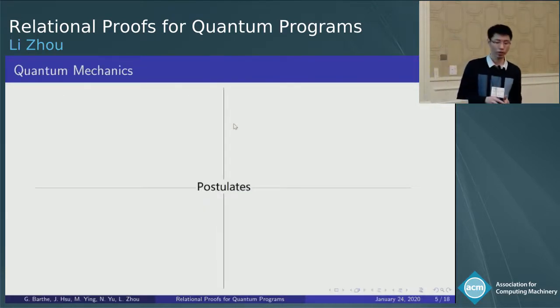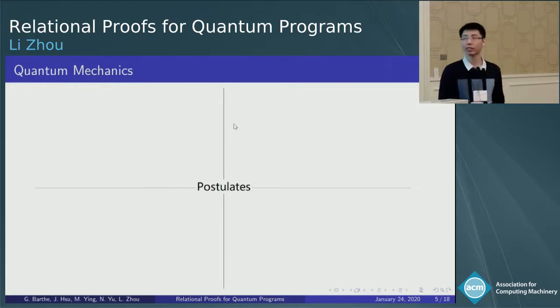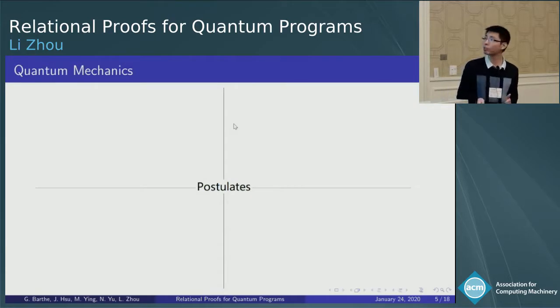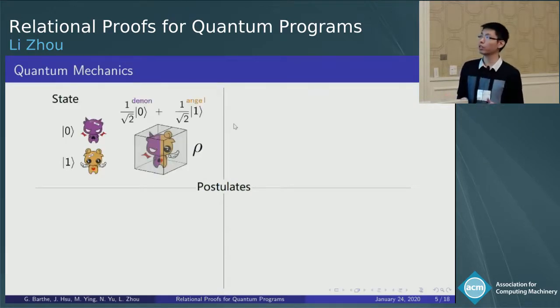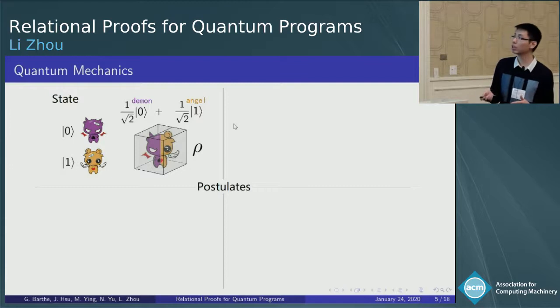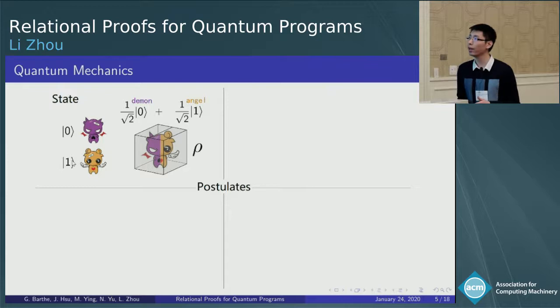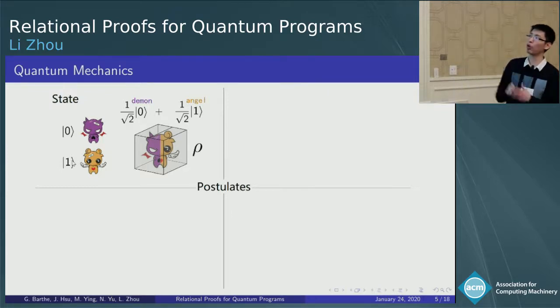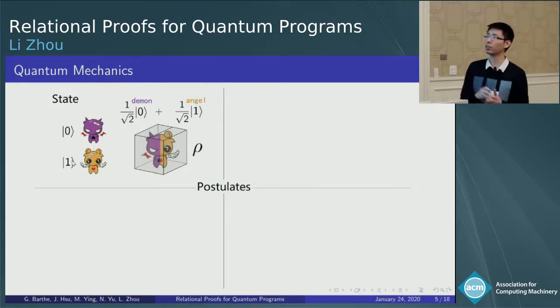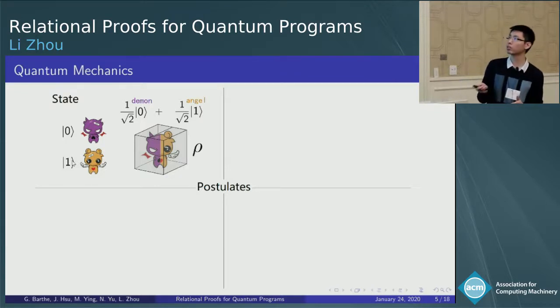Before going into detail, let me review the quantum mechanics. I hope to give you some intuition about quantum work. The first one is about the state. Unlike a classical state, a quantum state can be a superposition state. For example, if we use zero to denote a daemon and one for angel, then the quantum state in this box can be a daemon and an angel at the same time, which may be described by this state.